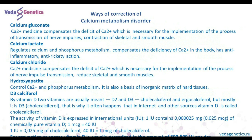Ways of correction of calcium metabolism disorders: Calcium gluconate is a medicine that compensates the deficit of calcium, which is necessary for the implementation of the process of transmission of nerve impulses and contraction of skeletal and smooth muscle. Calcium lactate regulates calcium and phosphorus metabolism, compensates the deficiency of calcium in the body, and has anti-inflammatory and anti-rickets action.